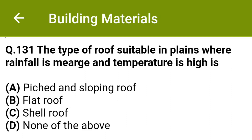Hello friends, welcome to Civil Engineering Exam. Today we are going to see MCQs related with building materials. The type of roof suitable in plains where rainfall is low and temperature is high is: option A pitched and sloping roof, option B flat roof, option C shell roof, option D none of the above. The correct answer is option B, flat roof.